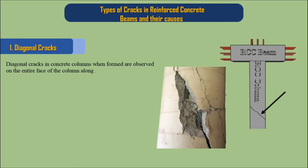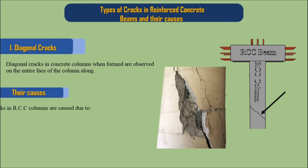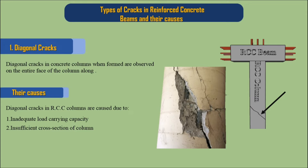1. Diagonal Cracks. Diagonal cracks in concrete columns, when formed, are observed on the entire face of the column. Their causes: diagonal cracks in RCC columns are caused due to 1. Inadequate load carrying capacity, 2. Insufficient cross section of column, 3. Inadequate reinforcement steel.